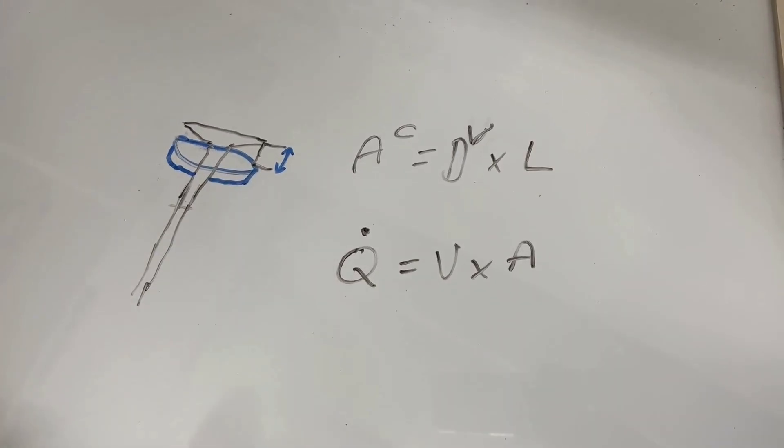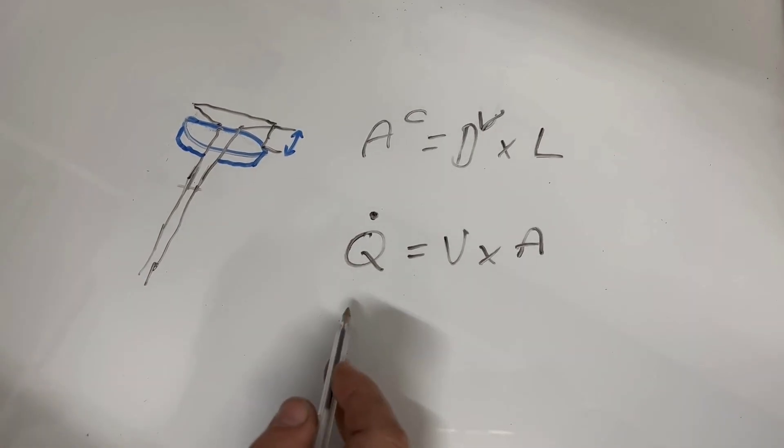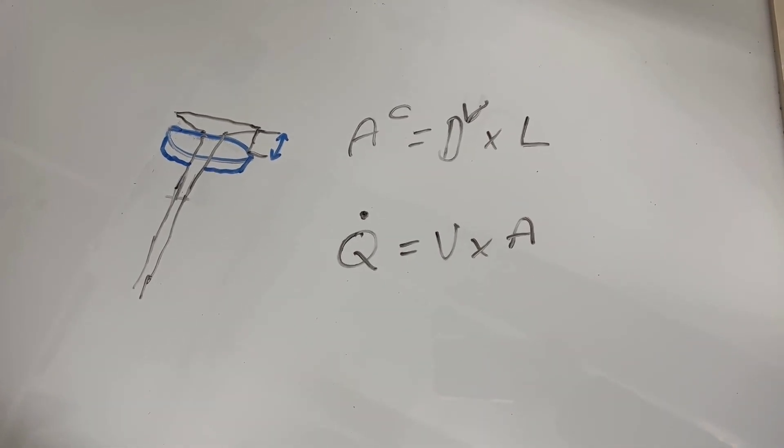So theoretically, if that area is bigger and our velocity stays the same, we should have a greater flow rate. Multiply this by the density and you'll get mass flow rate.